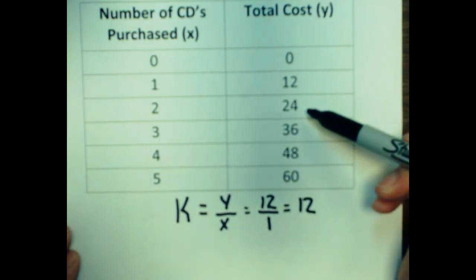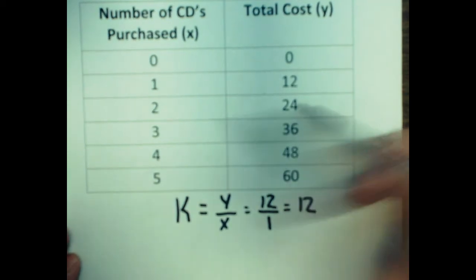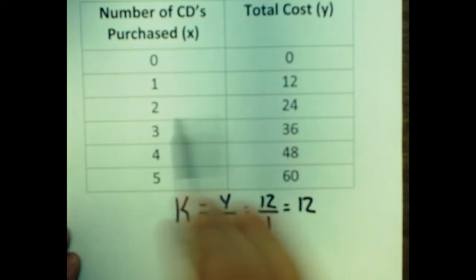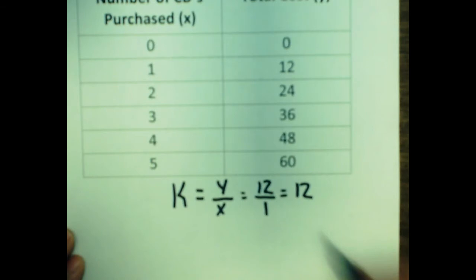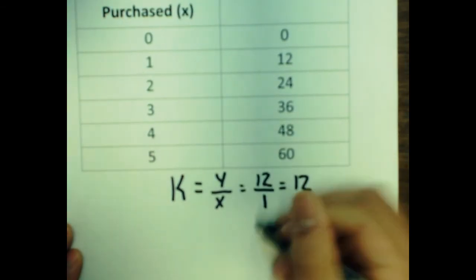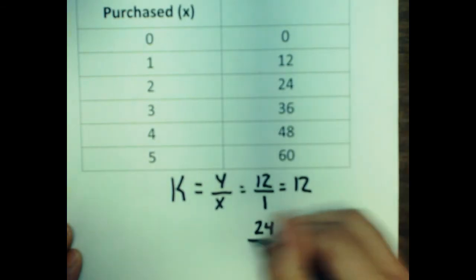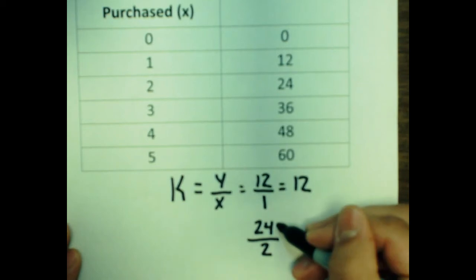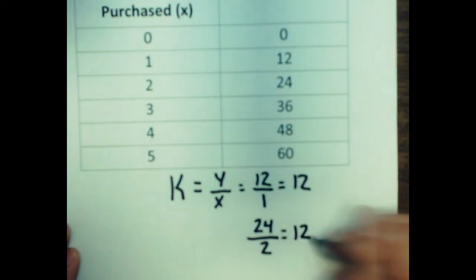So now let's go ahead and determine if it's true for the next set of values, our next set of x and y values. So I'm going to go ahead and drop this right below here. Take my 24 for my y value, take my 2 for my x value, and divide. 24 divided by 2 is also 12.